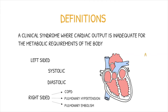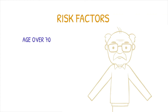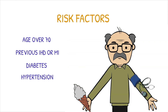There may also be acute exacerbations of heart failure in new onset or decompensated chronic heart failure. Some of the risk factors for developing heart failure are age over 70, previous ischemic heart disease or myocardial infarction, diabetes, hypertension, and atrial fibrillation.